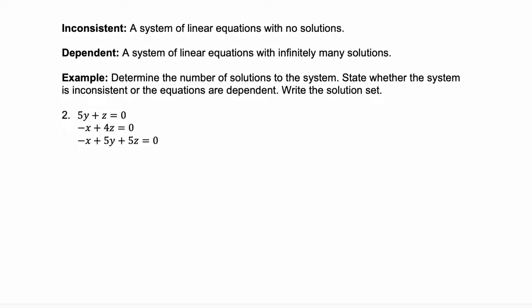When you're solving systems of equations you can have what's called an inconsistent system — a system that has no solution, meaning there's no point that the lines share in common. You can also have a dependent system, which is when you have infinitely many solutions, meaning those equations are essentially all the same thing. In example two we're going to determine the number of solutions to the system.